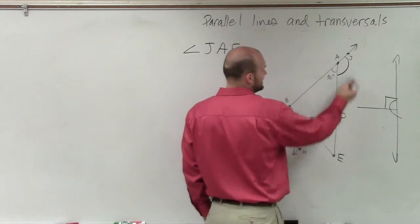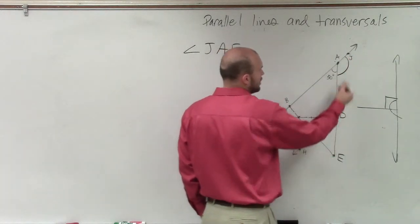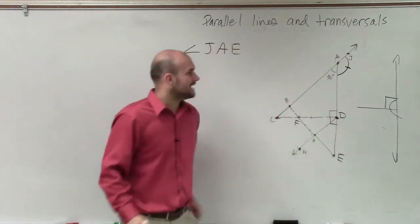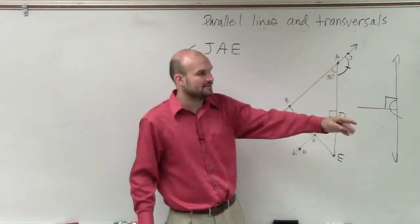So right now, I have JAE. J to A to E. What angle can I add to this to make it a straight line? Malik?